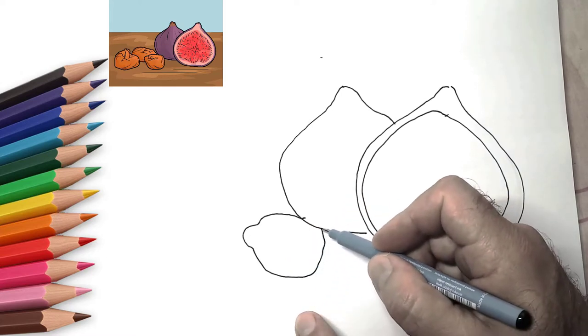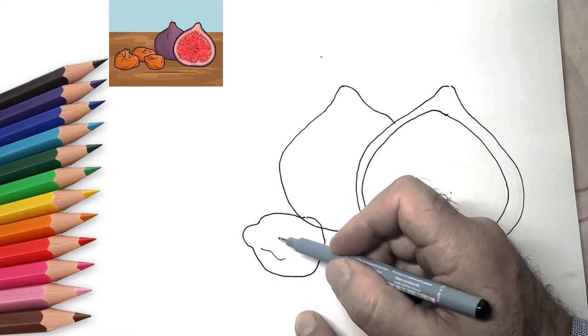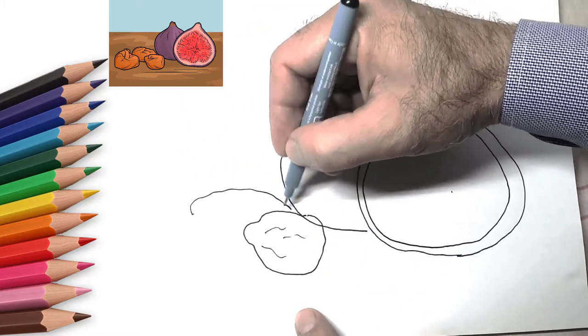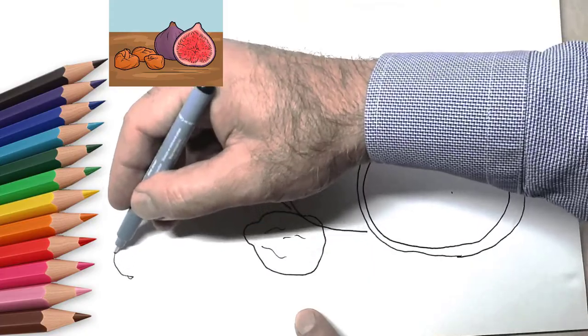Now let's draw the details. Cut figs have many lines, many details. Here we draw them. Let's draw our figs.